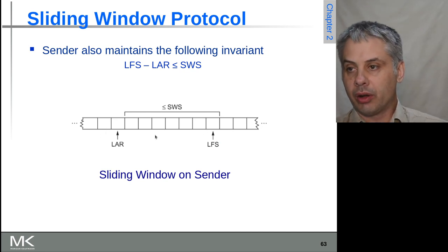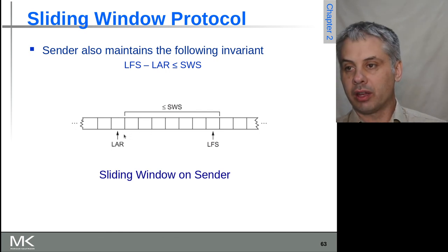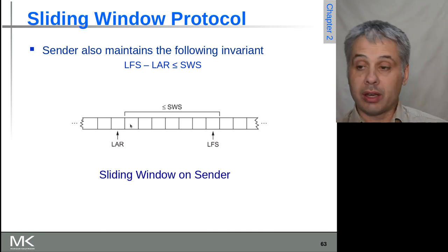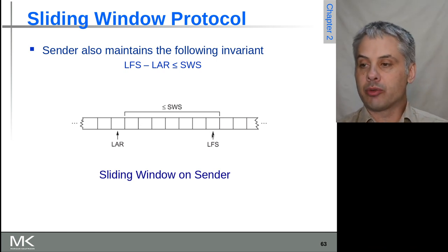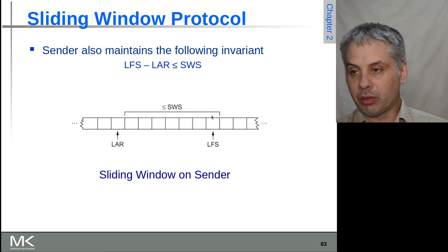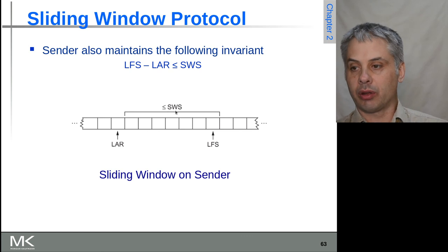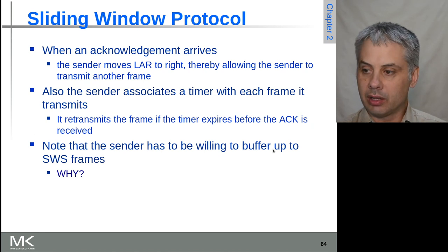We have a sliding window over the set of frames that can be sent. We have this stream of frames that need to be sent. The last acknowledgement received will be the earliest point in the stream. The first frame that we want to send is always after the last acknowledgement received. Then we'll keep sending them and keep track of where we've got up to in the last frame sent. That whole distance from the frame straight after the LAR to the LFS has to be less than the sliding window size, or not greater than it. It can be equal to it. We'll continue that in the next video.